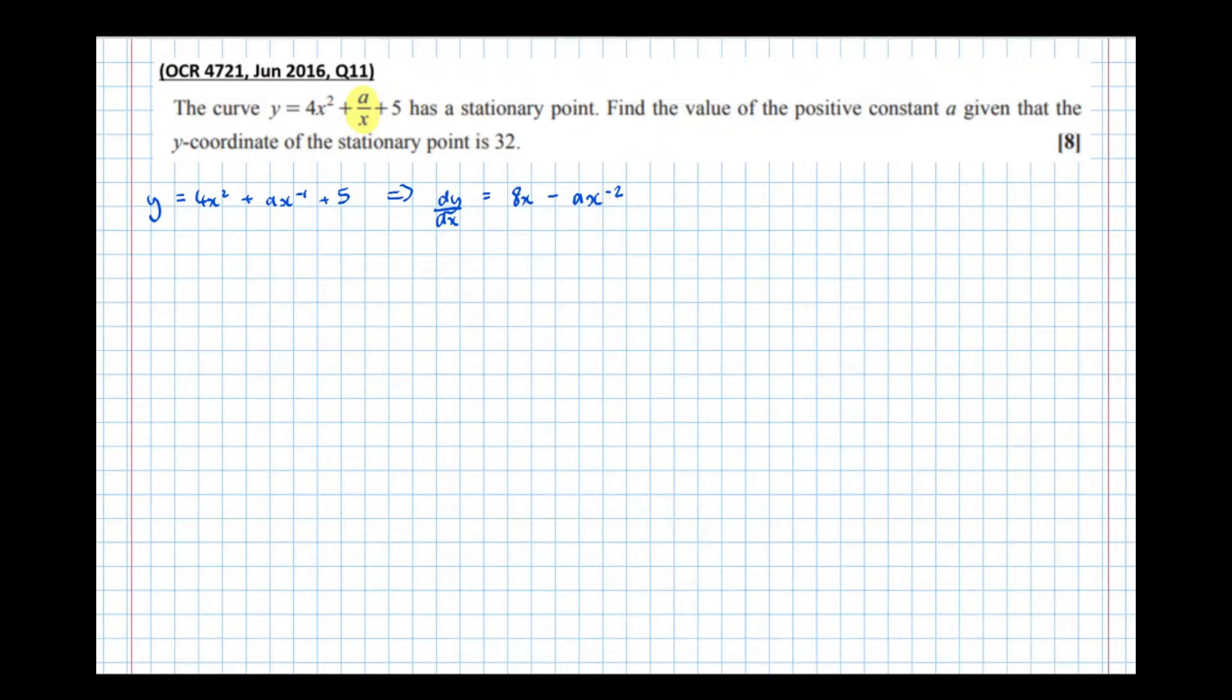Then the plus 5 differentiates to 0, and we know that the differential is equal to 0 at the stationary point.